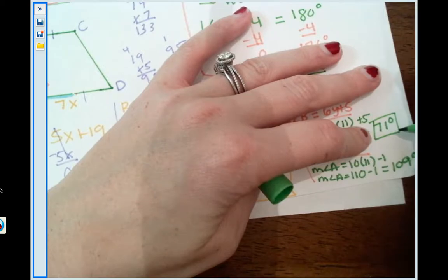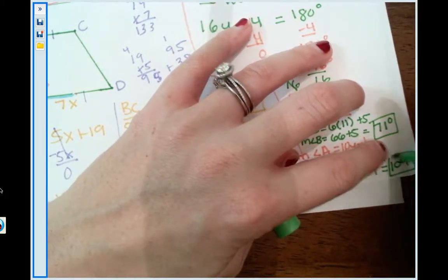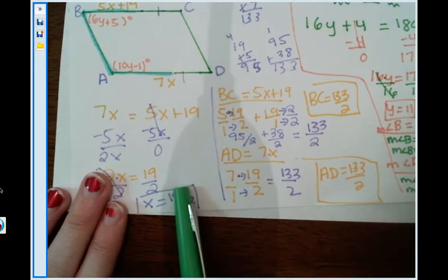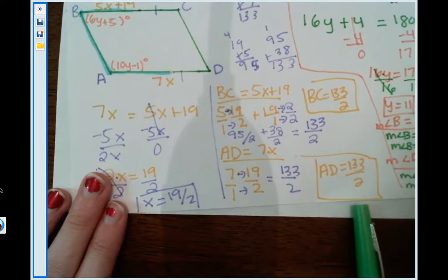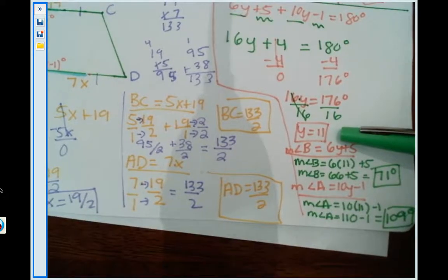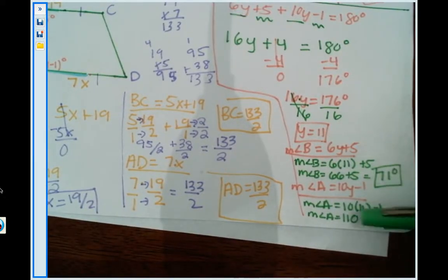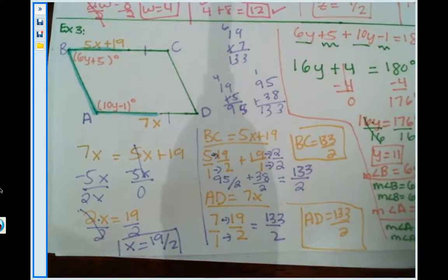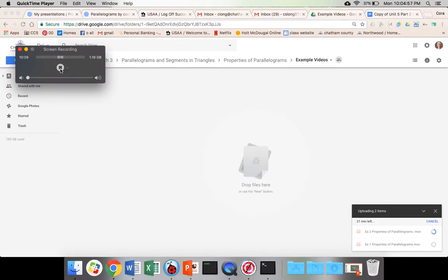So we solved for x for the lengths of each side, BC and AD. We solved for y and the measures of angle B and A. Pretty nifty, right? I hope you guys had the most fun you've ever had in your life because I just did right there. So I hope you guys felt the same way. Nice job.